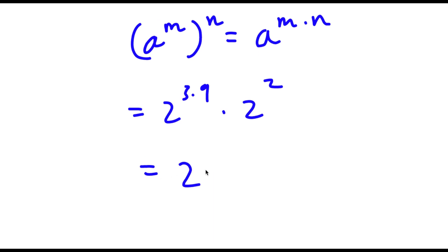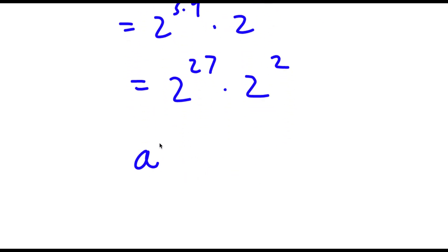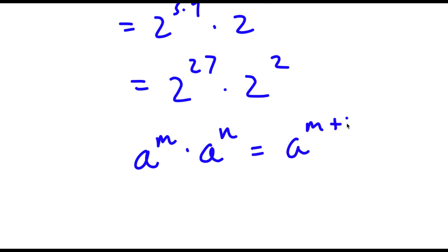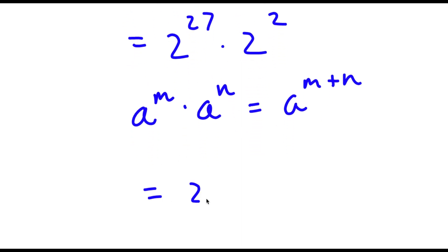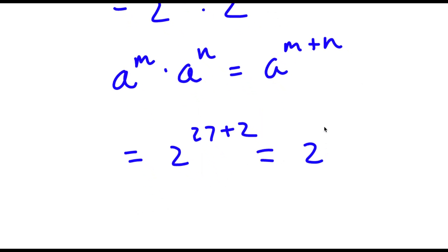So I have 2 to the power of 27 times 2 to the power of 2. Now, if I have something in the form a to the power of m times a to the power of n, this is the same thing as a to the power of m plus n. So 2 to the power of 27 times 2 to the power of 2 equals 2 to the power of 27 plus 2. Now 27 plus 2 equals 29, so I have 2 to the power of 29, and this is my answer.